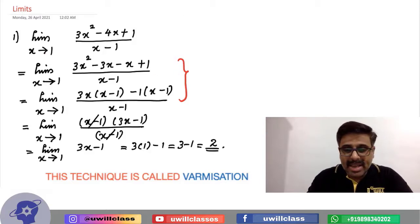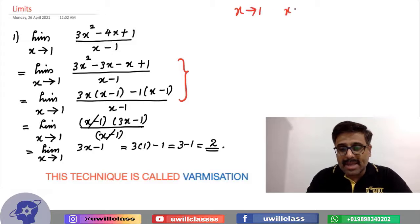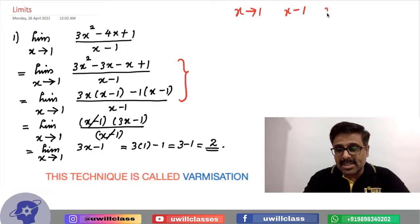First trick, if x tends to 1, remember x minus 1 is one of the factors. So, if x tends to 2, what is one of the factors? x minus 2. And if x tends to minus 2, which is one of the factors? Correct, x plus 2.